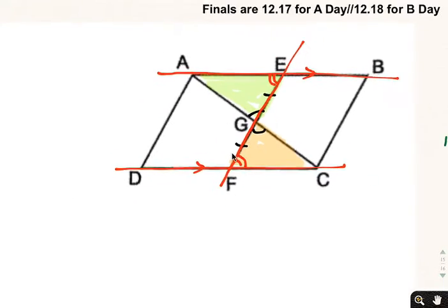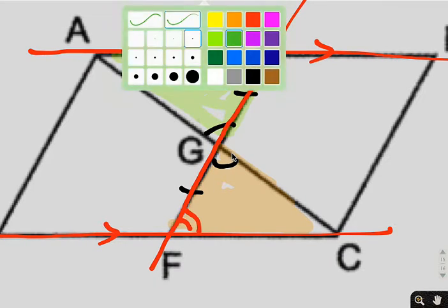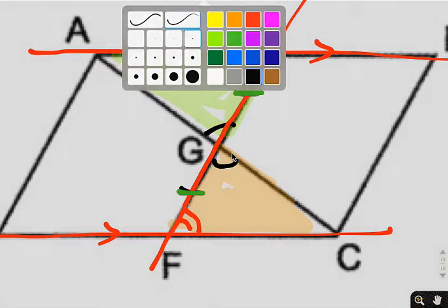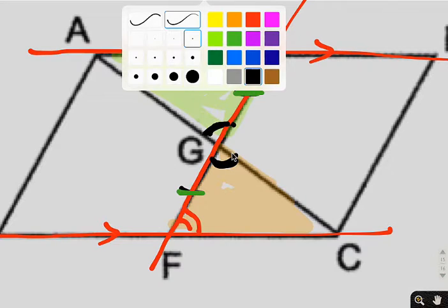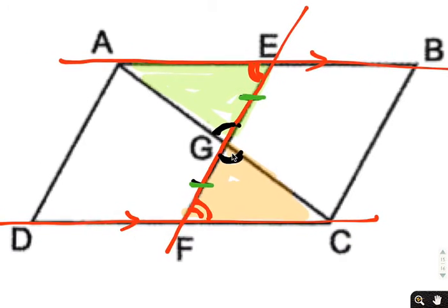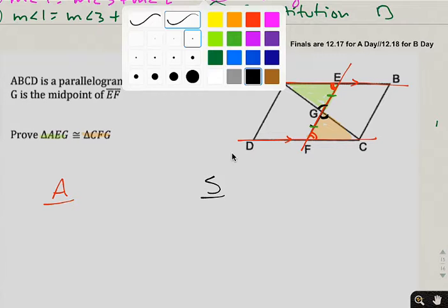That gives me angle-side-angle. Once again, I have G as a midpoint, and that gives me my first set of sides. I have vertical angles in the middle that gives me an angle. Then I'm going to use the fact the top and bottom lines in a parallelogram are parallel and then use EF as a transversal to find alternate interior angles congruent, which completes my angle-side-angle condition. Let's write it up. There's nothing left to do except just to do it. We're going to have an angle-side-angle proof, which are frankly my favorite types of proof.